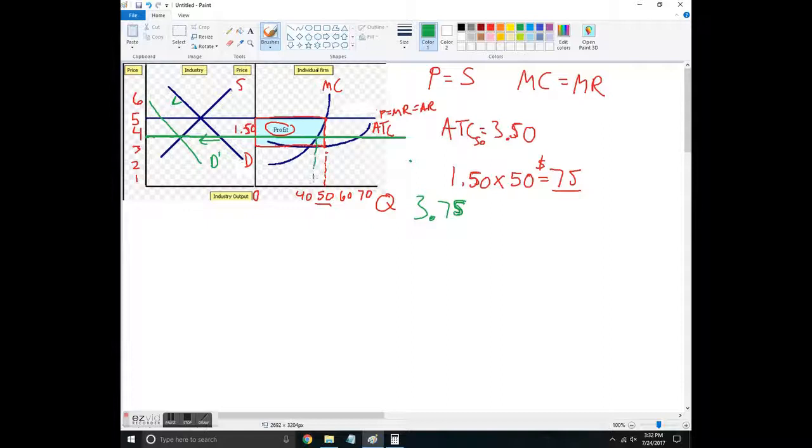Because if you look down here, the place where marginal cost equals marginal revenue is now at 45. So now they're only going to produce - their costs are $3.50, and now their profit is just going to be this spot right here. So it's 25 cents per unit...